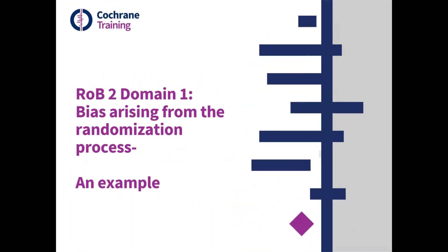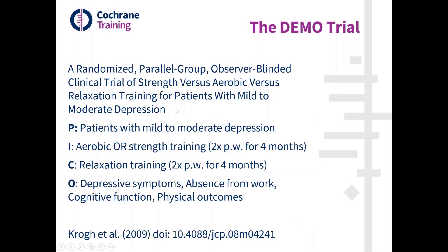In this worked example, we are going to try and apply the signalling questions for Domain 1 of ROB 2, which covers bias arising from the randomisation process, to a real trial. The trial we are going to use is the demo trial. This trial compared twice weekly aerobic, strength, or relaxation training for four months for the alleviation of mild to moderate depression. The aerobic and strength training arms were the intervention arms, with the relaxation arm acting as the control arm.